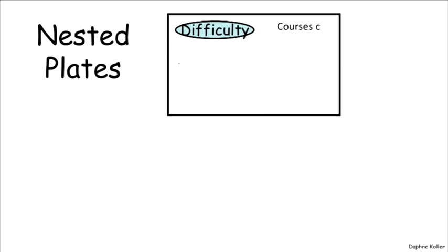Just repeating the exact same model multiple times is not particularly interesting. So now let's talk about how you can overlap different plates — in other words, think about how different types of objects in the model interact with each other. In this case, we have two kinds of objects in our universe of discourse: we have courses, which we'll call little c, and students, which we'll call little s. Now let's think about how you might replicate variables corresponding to properties of courses and properties of students.